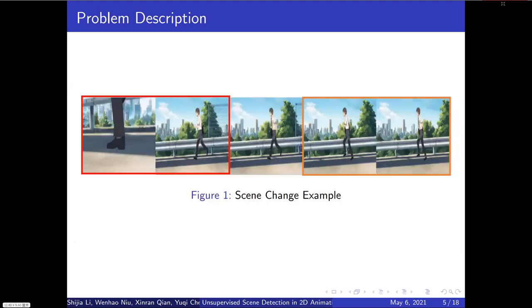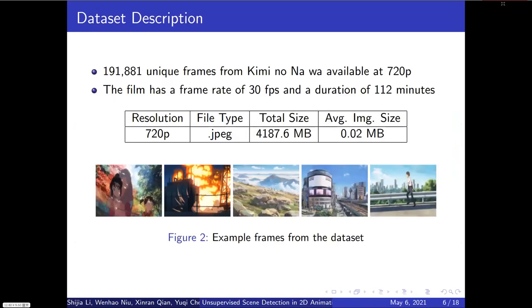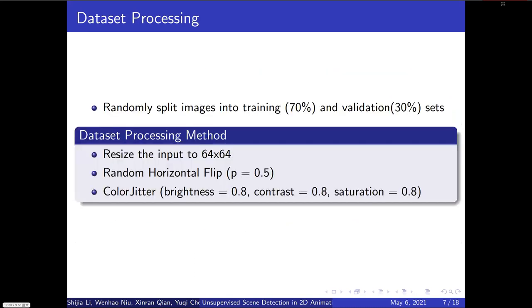Below are several pictures illustrating the scene changes. The red box is classified as a scene change, while the orange box does not. The dataset we used is the unique frames from the film Kimi no Nawa. The film has a frame rate of 30 frames per second and a duration of 112 minutes. We randomly split the full dataset into training and validation, and the data augmentation methods are also listed here.